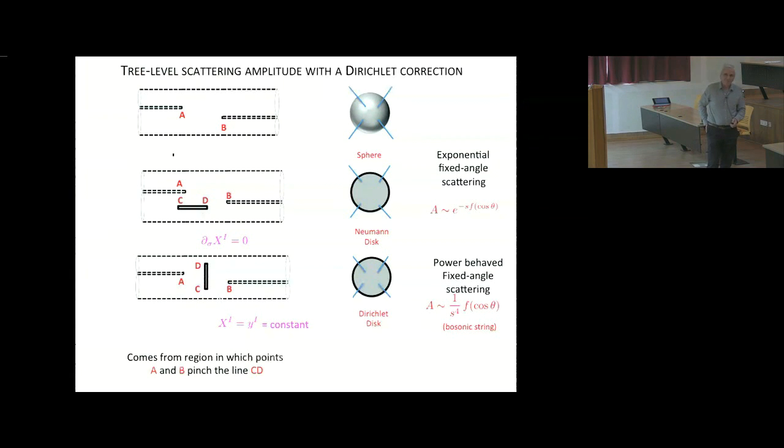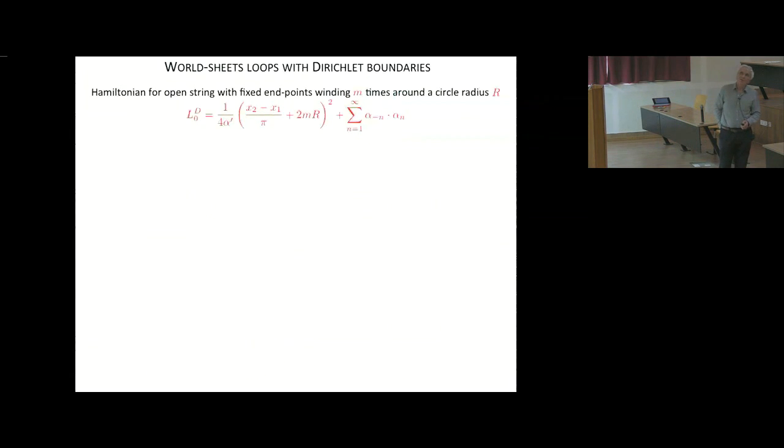So the question is, what happens when you iterate this process and you look at higher numbers of insertions? Let me motivate that by discussing a construction of such world sheets in terms of a Hamiltonian. Now I'm looking at an open string Hamiltonian, world sheet Hamiltonian, where the world sheet joins two points, x1 and x2. So instead of momentum space, I'm looking at fixed strings with endpoints fixed at points x1 and x2. For future reference, I'm also looking at compactifying one of the dimensions, and a fixed endpoint string can wind around a compact dimension, in this case n times. So this is the mode expansion for such an open string.